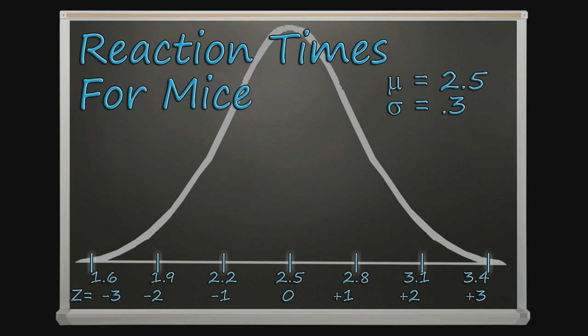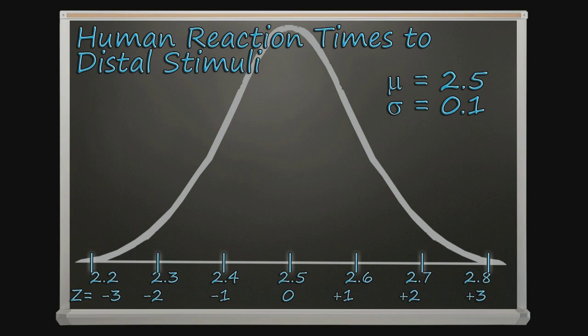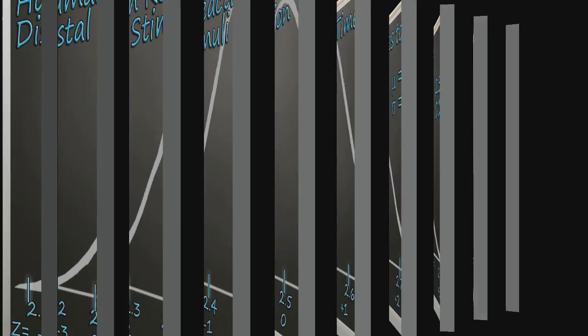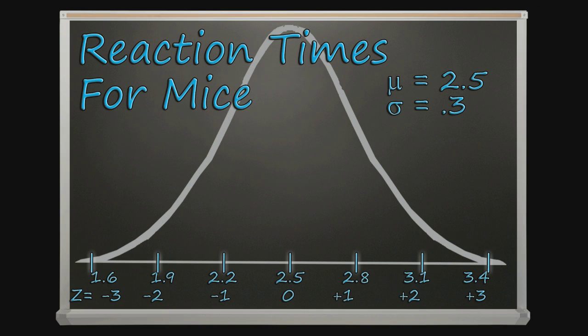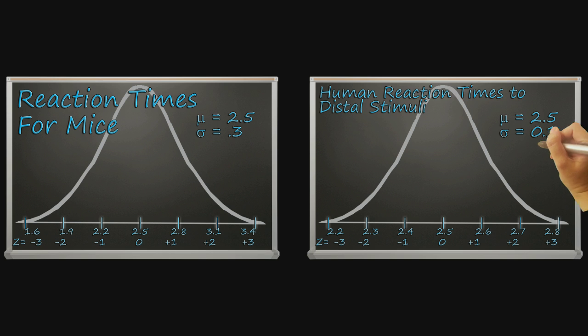Looking at those two distributions, the mice have a lot more variation in how they perform on this measure. Their scores are spread out way more than people's scores are. Do you see that? It's the same picture, it's the same shape, because normal distributions all look like this. But the reaction times for people have a lot less variation than the reaction times for the mice.